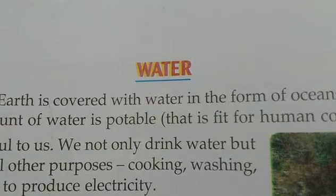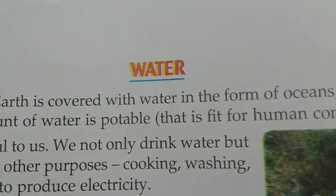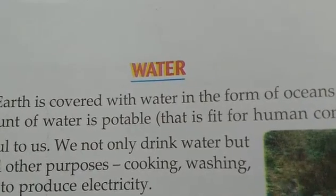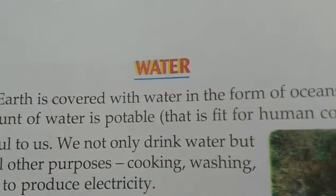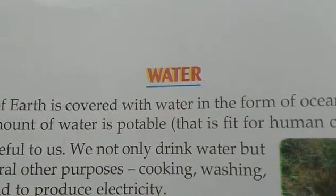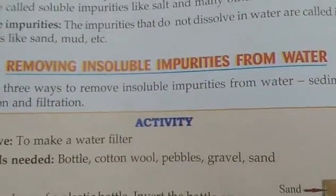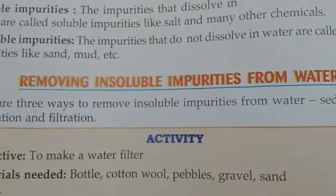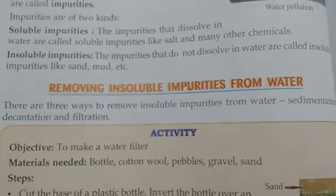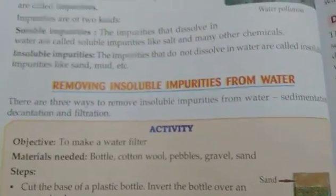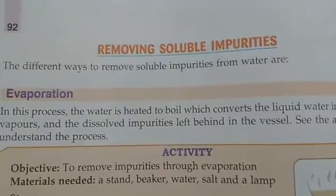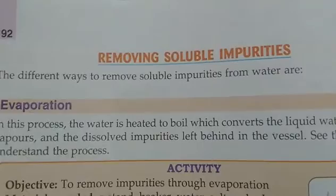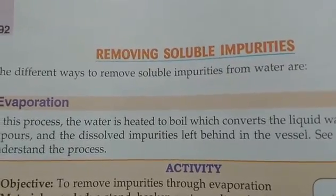Impurities that dissolve in water are soluble impurities, such as salt and sugar. Impurities that do not dissolve in water are insoluble impurities, like sand and mud. There are 3 ways to remove insoluble impurities from water: sedimentation, decantation, and filtration. The processes for removing soluble impurities are evaporation and distillation.